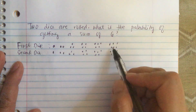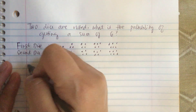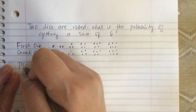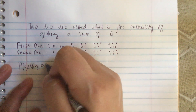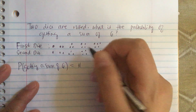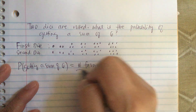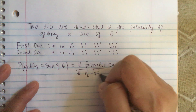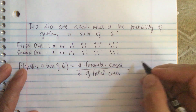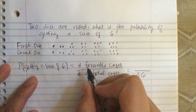Six times six is equal to 36, so the total number of cases is 36. The probability of getting a sum of six equals the number of favorable cases over the number of total cases, which is 36.